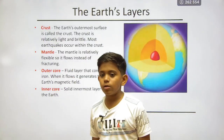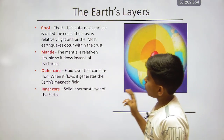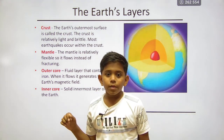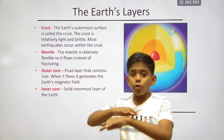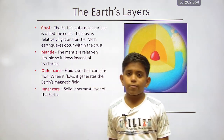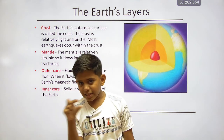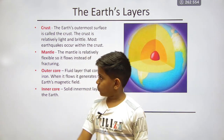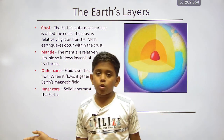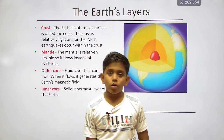The outermost surface of the earth is called the crust. The crust is relatively light and brittle. The outer surface on which we live is the crust — the soil, trees, and all animals are present on this crust. It is thin and brittle. Most earthquakes occur within the crust.